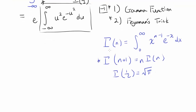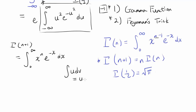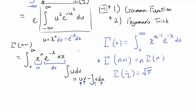The first property is easy to prove using integration by parts. γ(n+1) is, by definition, ∫₀^∞ xⁿ e^(-x) dx. Integration by parts states ∫u dv = uv - ∫v du. We pick u = xⁿ and dv = e^(-x) dx. Then du = n·x^(n-1) dx, and v = -e^(-x).